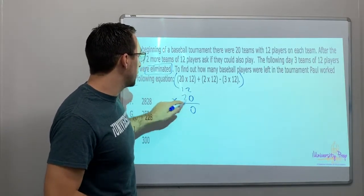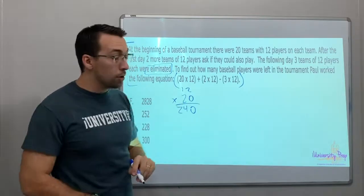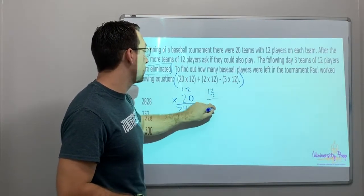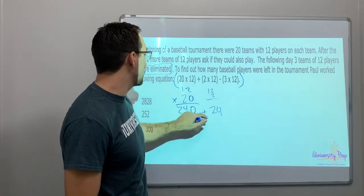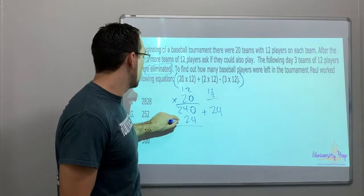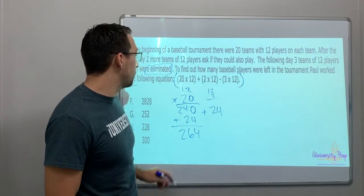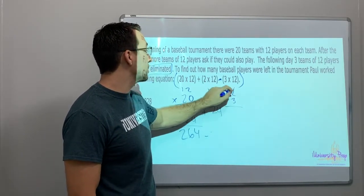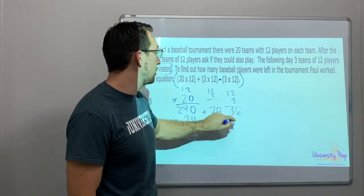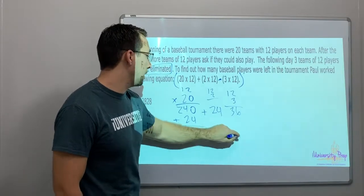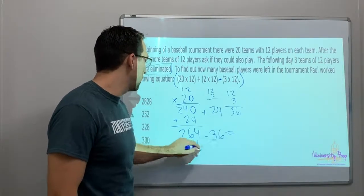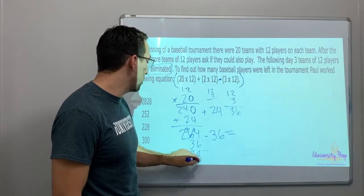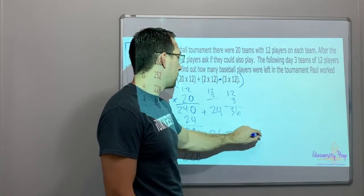Let's do the math. 12 times 20 equals 240. Plus 12 times 2 equals 24. So 240 plus 24 equals 264. Then minus 3 times 12, which is 36. 264 minus 36 equals 228. That's my final answer.